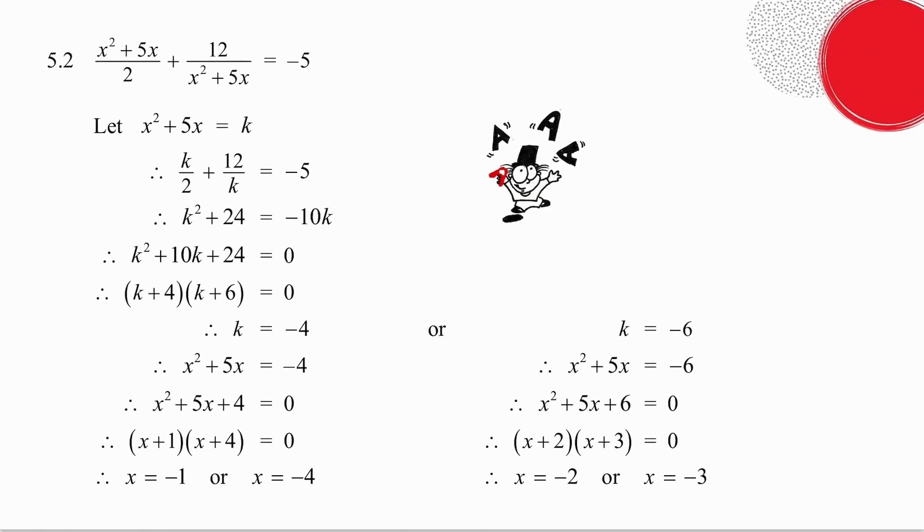So in this example your natural reaction would be to multiply by your common denominator. Now your common denominator includes a term with x squared. If I'm going to multiply everything by a term that has an x squared, I'm going to end up getting a term in x to the 4 and we really don't want to be solving an equation in x to the 4. You will notice that there's an x squared plus 5x and there's another x squared plus 5x. So what I'm going to do is I'm going to let x squared plus 5x be equal to k.